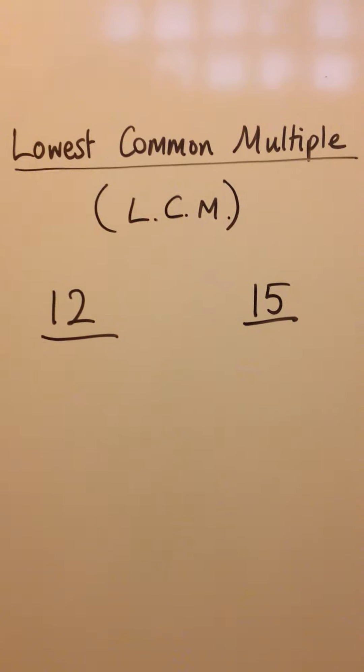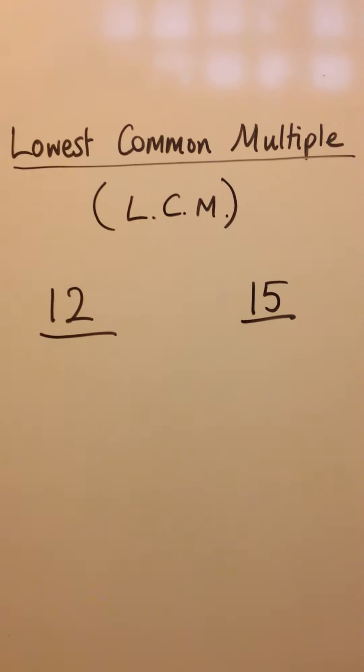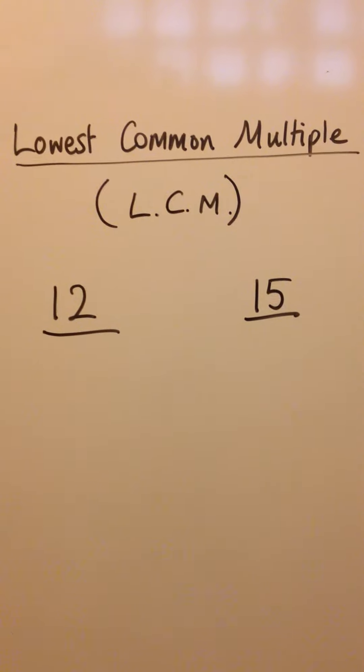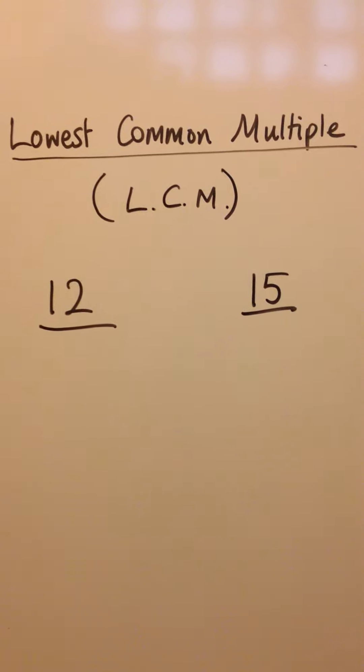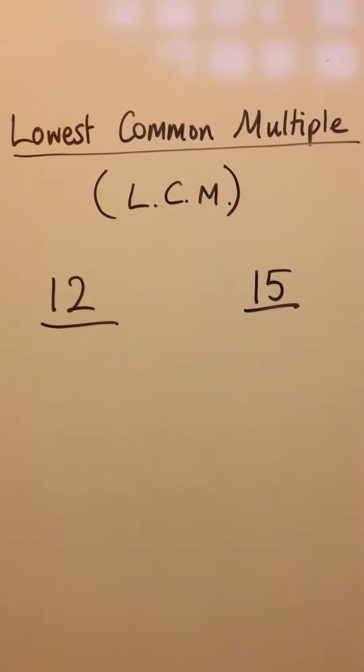Lowest common multiple. Multiples are just the answers in a times table. So multiples of 12 are the answers in a 12 times table. Multiples of 15 are the answers in a 15 times table.